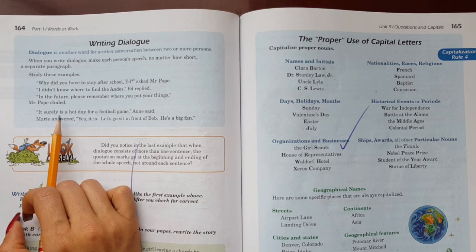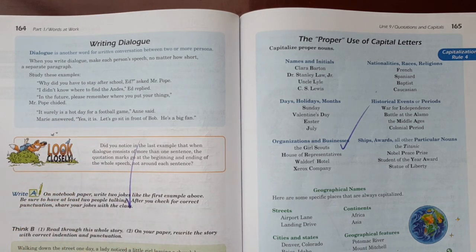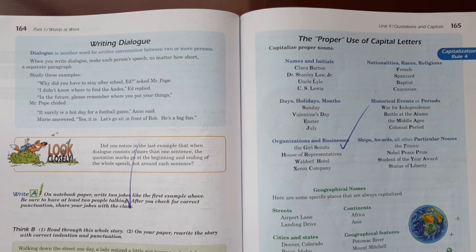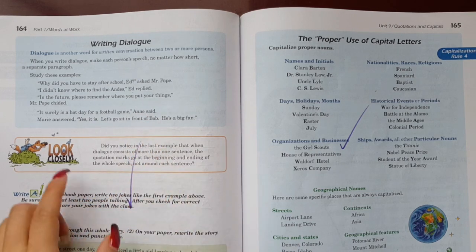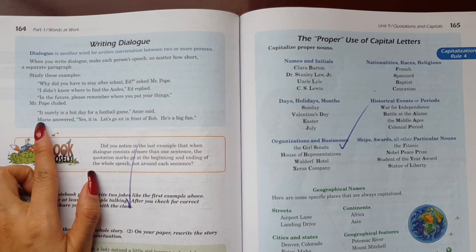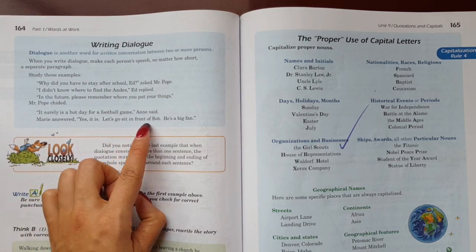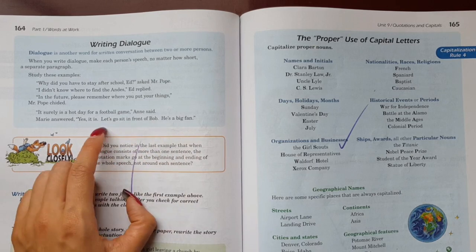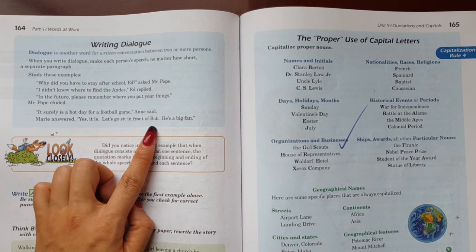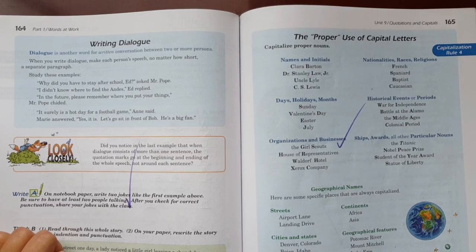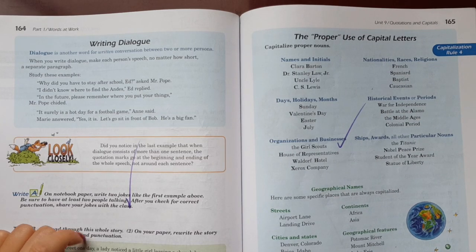Then here it says, It surely is a hot day for a football game, Annie said. Mary answered, yes it is. Let's go sit in front of Bob. He's a big fan. Let's go and sit in front of Bob. He's an excellent fan, or fanatic.